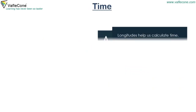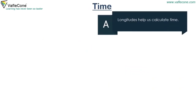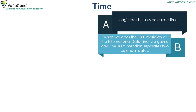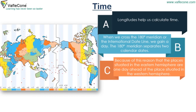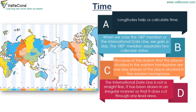Longitudes help us to calculate time. When we cross the 180 degree meridian or the International Date Line, we gain a day. The 180 degree meridian separates two calendar dates. Because of this, places situated in the eastern hemisphere are one day ahead of places situated in the western hemisphere. The International Date Line is not a straight line; it has been drawn in an irregular manner so that it does not cut through any land area.